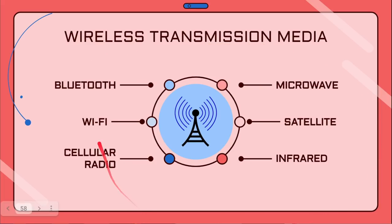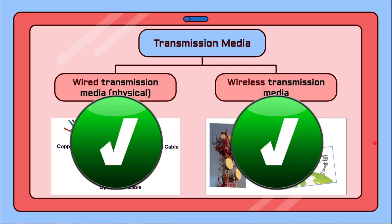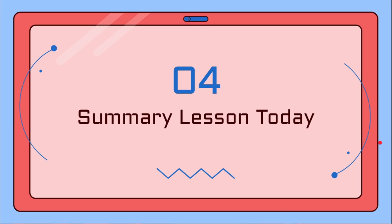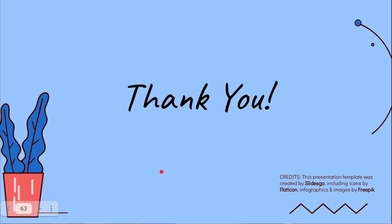Here is the list and transfer rates for each type of wireless transmission media we have covered today. That brings us to the end of our lesson. In summary: we looked at what a network is and its definition; we looked at communication devices, their definition and types; and finally we looked at transmission media, its definition, and its two types — wired and wireless — with examples for each. That is all from me. Thank you very much for your attention.